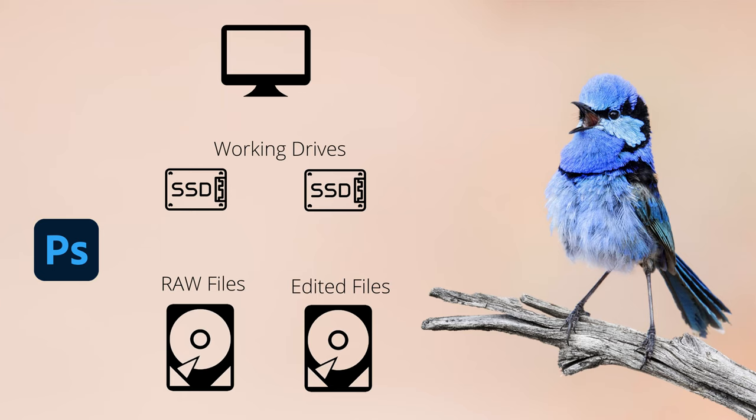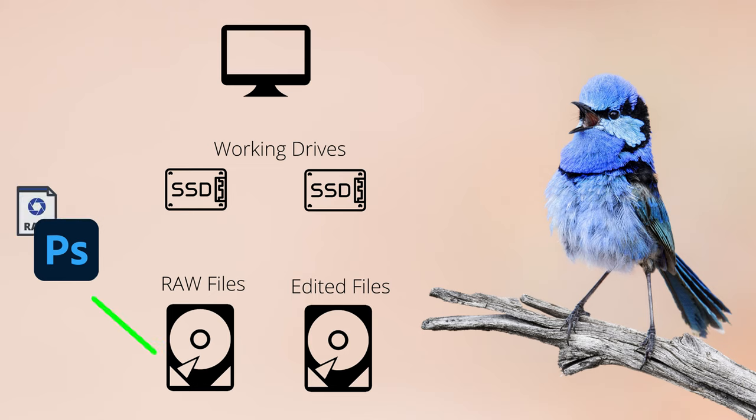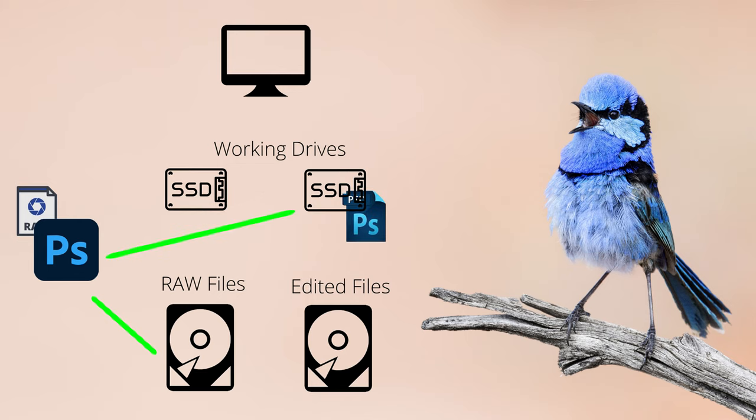For my working drive and PSD files, I do it in a very similar way. If I open a RAW file to be edited, it opens in Photoshop, and I save that file onto a separate fast SSD working drive for my PSD files. This lets me utilize the faster speed of the SSD when browsing and editing images, and also gives me a good overview of what files still need to be archived.